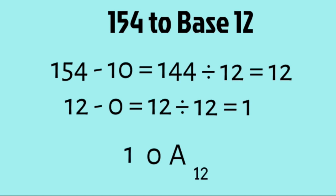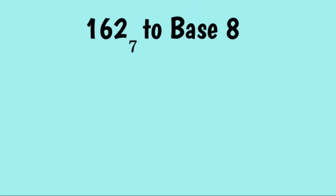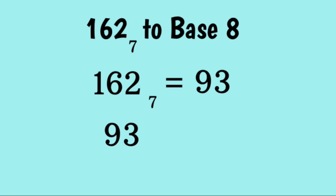Finally, we will learn how to convert numbers between two bases that are both not 10. Let's try an example. 162 base 7 to base 8. First, we convert 162 base 7 to base 10. We get a value of 93. Then, we convert 93 base 10 to base 8 to get a value of 135 base 8.